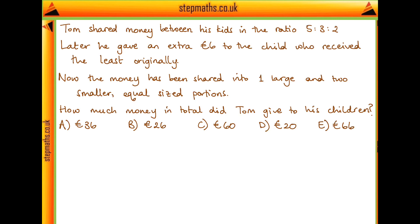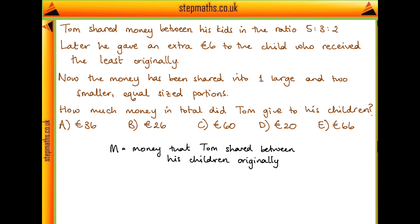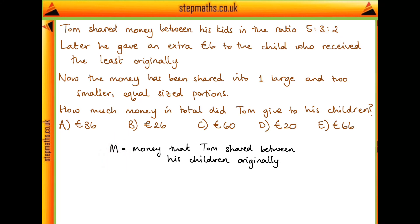So what do we want to work out and what are our unknowns? That's just the amount of money that Tom shared, so let's give that a name so that we can actually work with it. I'm going to call capital M the amount of money that Tom shares between his children originally — the amount shared in the ratio of 5 to 3 to 2. The easiest way is to notice that 5 plus 3 plus 2 gives us 10, so if the total amount M was divided by 10, the first child would get 5 lots, the second would get 3 lots, and the third child would get 2 lots.